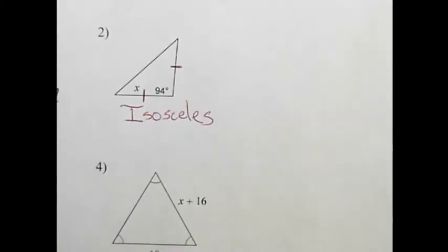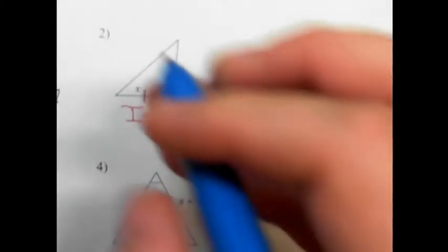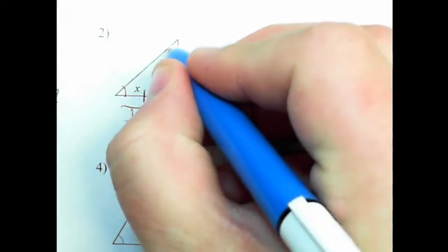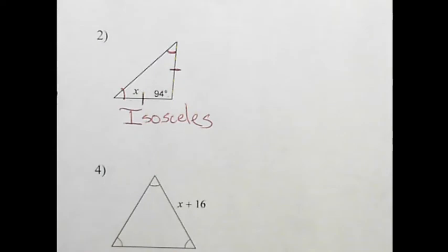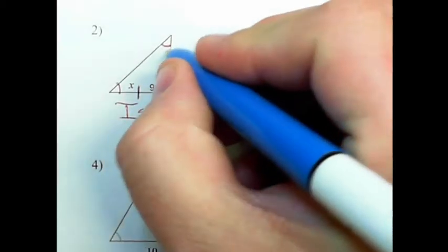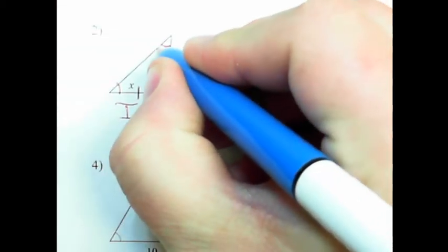I'm given that this angle here is 94 degrees while these two angles are congruent, and I'm asked to find what x is. This one's a little trickier, but not really. If this angle is equal to x, then this angle up here has to be equal to x as well.